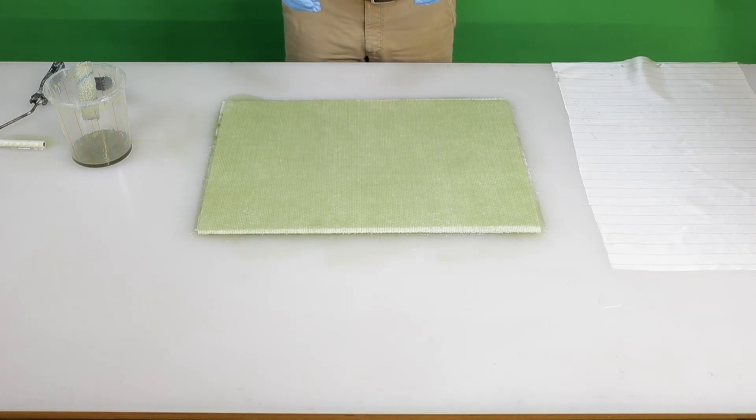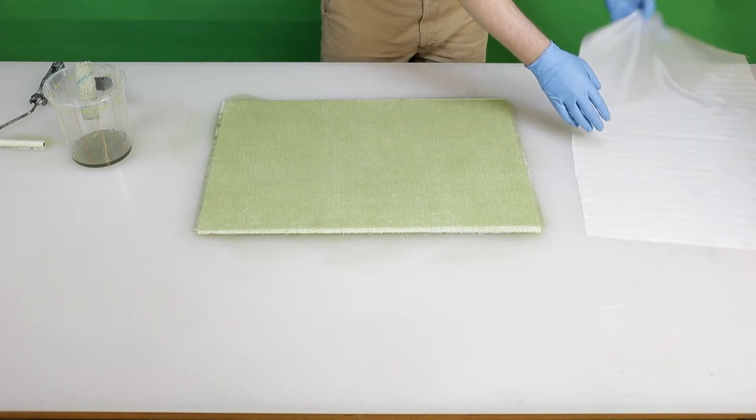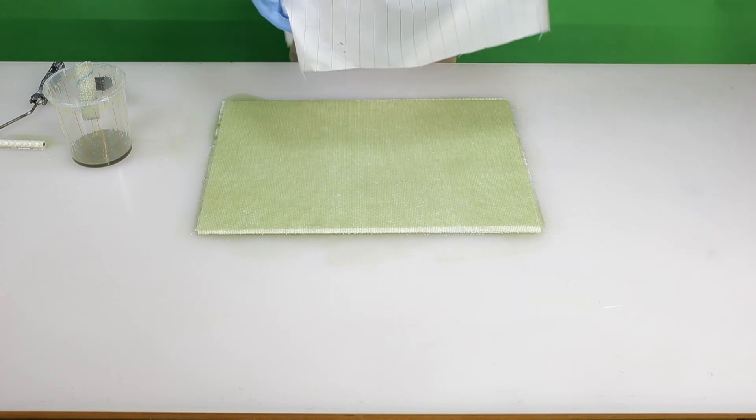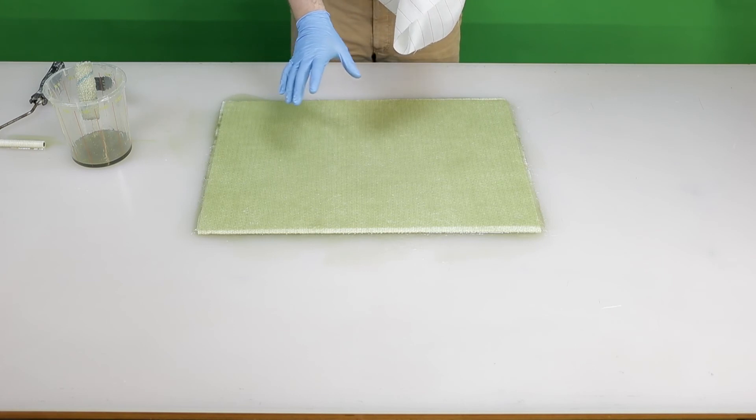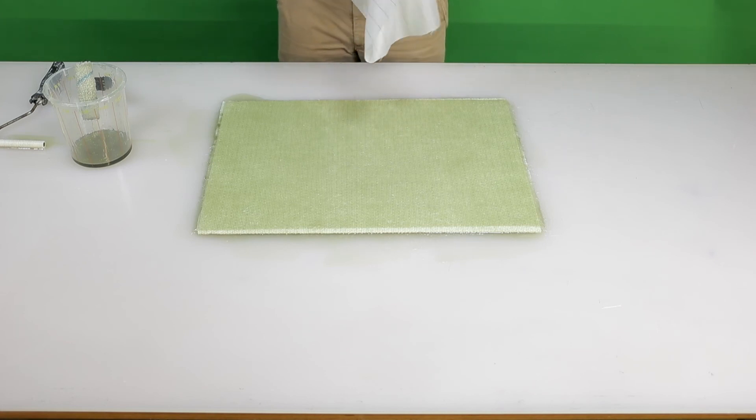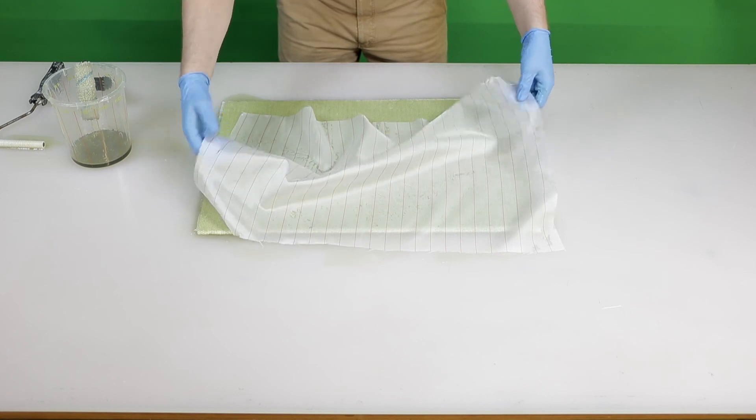When we are confident the glass layer is fully saturated, we can apply a peel ply to cover the backside. Peel ply removes excess resin after cure and creates a good surface for coating or adhesive. Although peel ply is not a structural layer, we make sure that the layer is fully saturated.